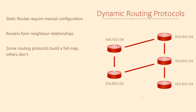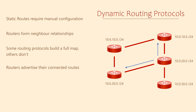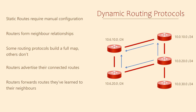Each router will advertise their connected networks, saying: if you want to reach this network, send your packets this way. A neighbouring router then receives this advertisement and will store a copy of the route in a table in memory. If this is the best route, it installs it in the routing table. When a router learns a route it will share it with other routers it knows about, and each of those will store the route in memory and advertise to their own neighbours.